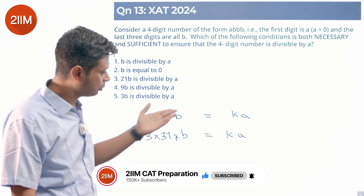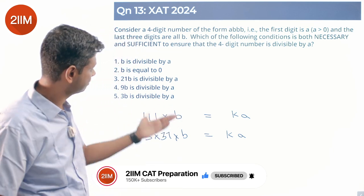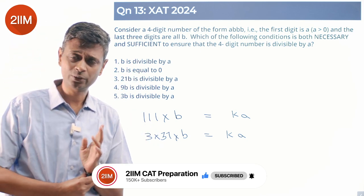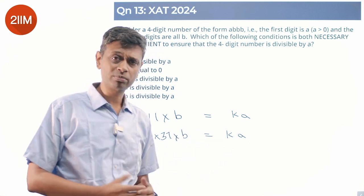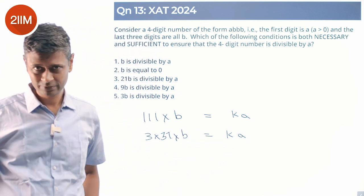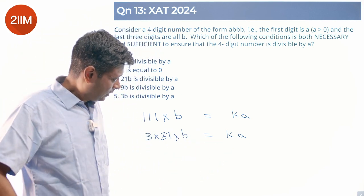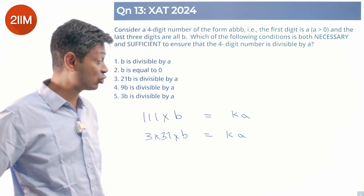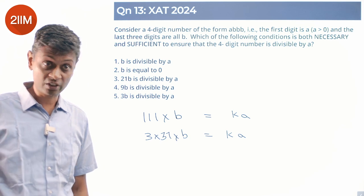If B were a multiple of A, this will be satisfied. B is divisible by A, this is satisfied. So if B were 8 and A were 4, this will work. Nice. But is that a necessary condition? Is there a scenario where B is not a multiple of A and this is still satisfied?